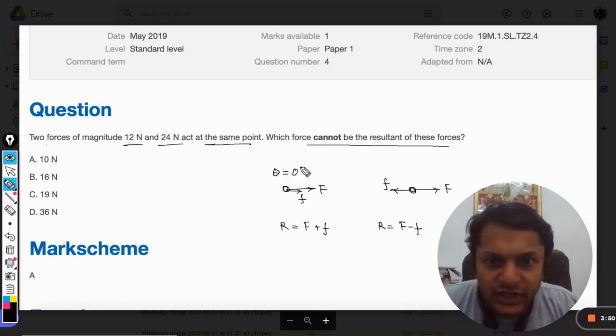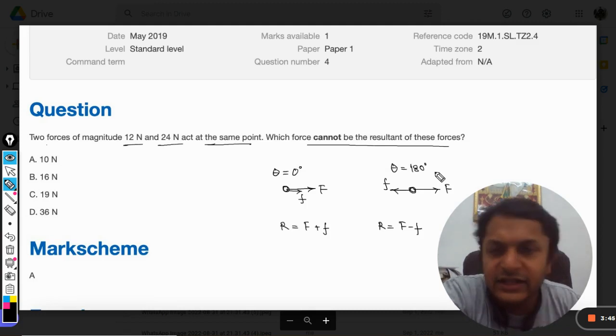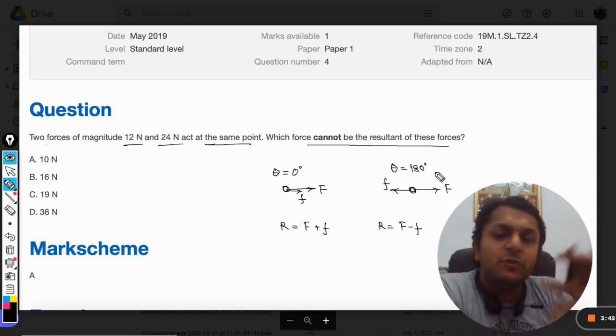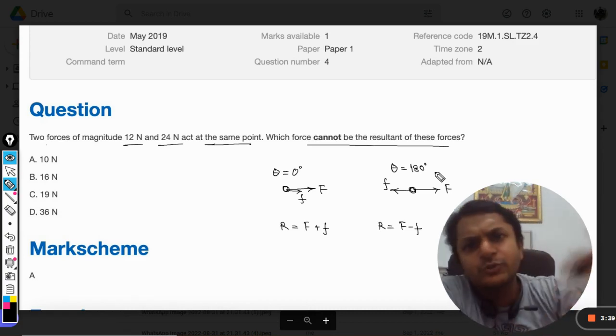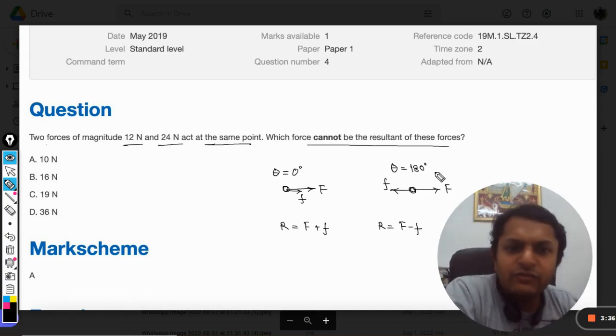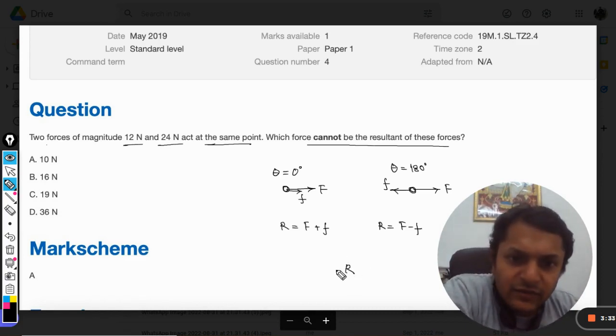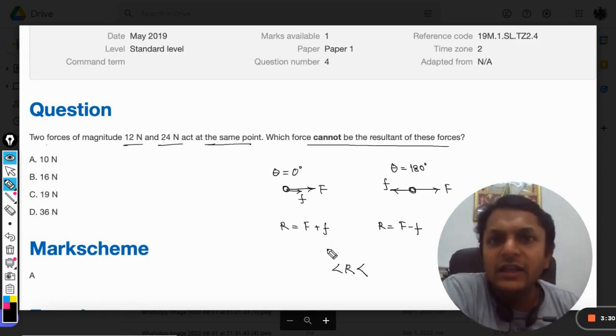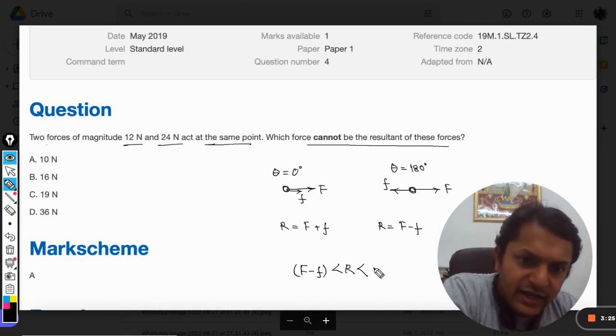Now here the angle is zero degree and here the angle is 180 degrees. But what if the angle is between zero and 180? If it is an acute angle, if it is obtuse but lesser than 180, what will happen then? Well, the resultant will always lie in the range of F minus F and F plus F.